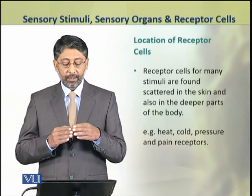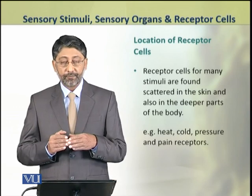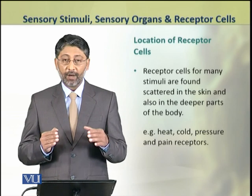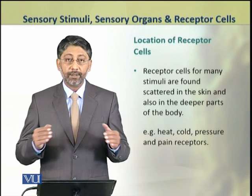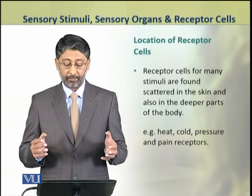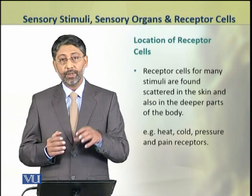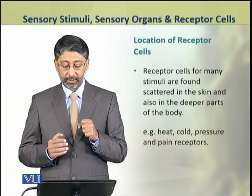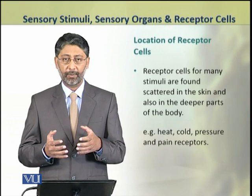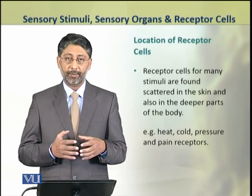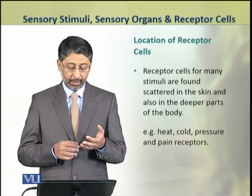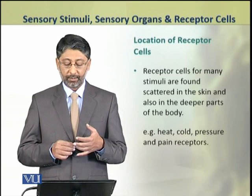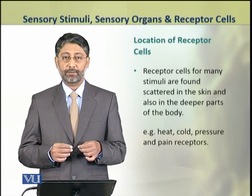The receptor cells for many stimuli are found scattered in the skin and also in the deeper parts of the body. For example, receptors for heat, cold, pressure, and pain.